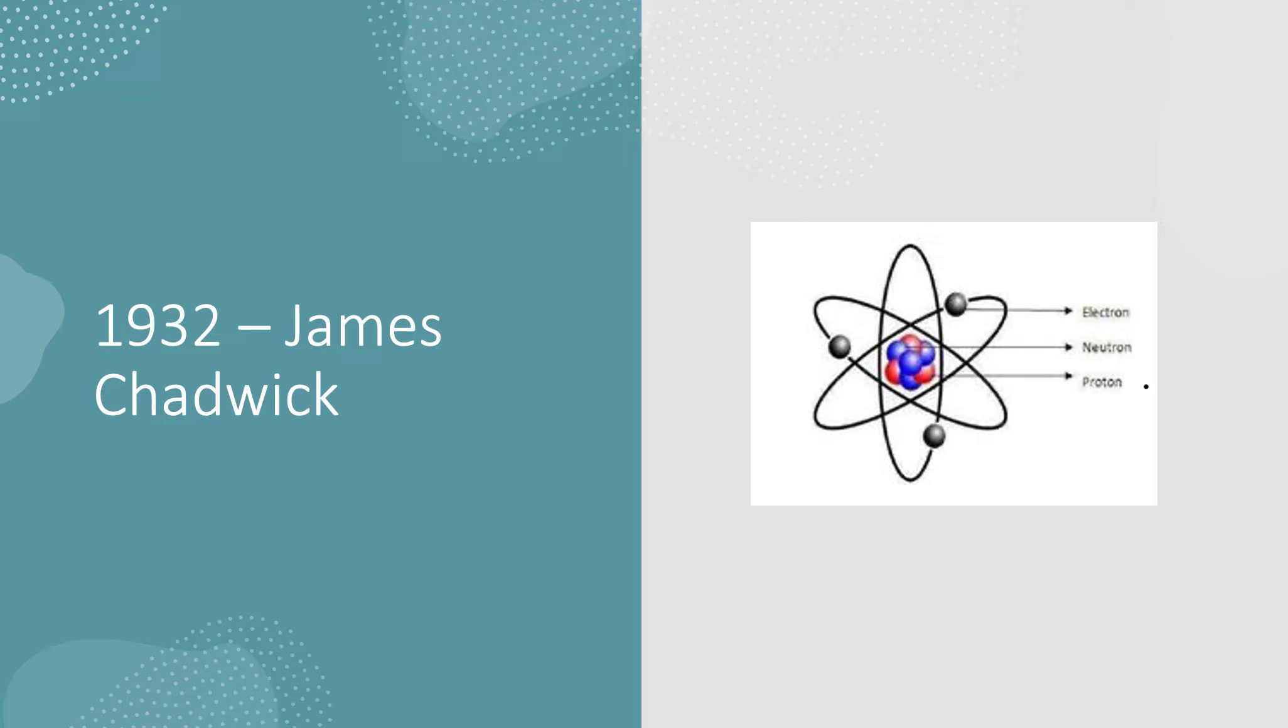This took ages to discover because neutrons, they are neutral. They don't have a charge. So it was really hard to figure them out. They don't add any mass to the atom. They have a mass of zero. They are completely neutral. So now we have this atom, this atom which has a nucleus in the center of it containing the protons and the neutrons.